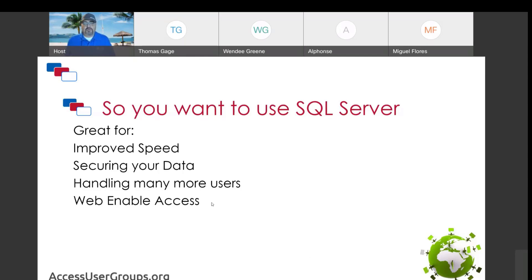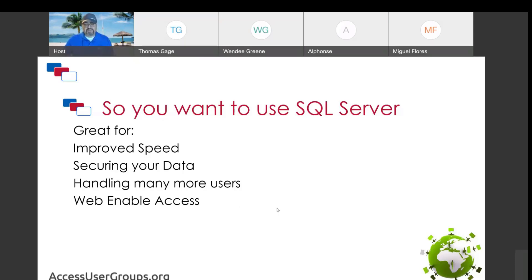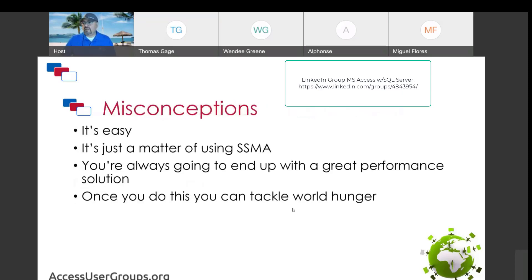With SQL Server, you get better performance over VPN. We also have a process we call 'web-enabled Access' — we move the data to Azure and you use Access natively on the desktop while the data lives in Azure. There's also new Microsoft technology called Windows 365 that we'll discuss later in the academy in terms of its implications for moving your data to the cloud.